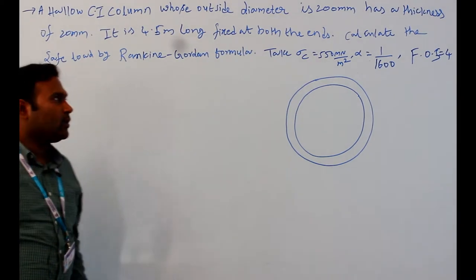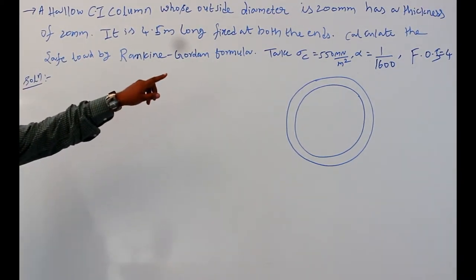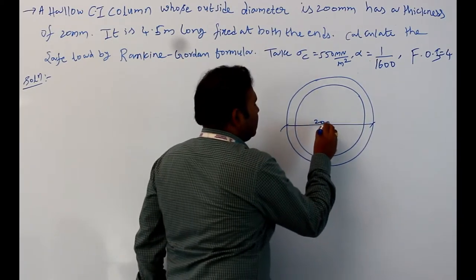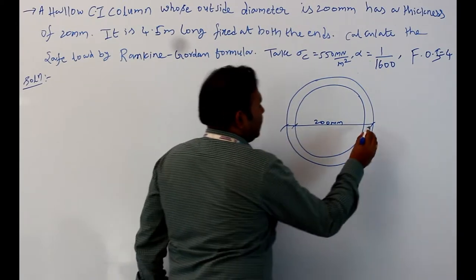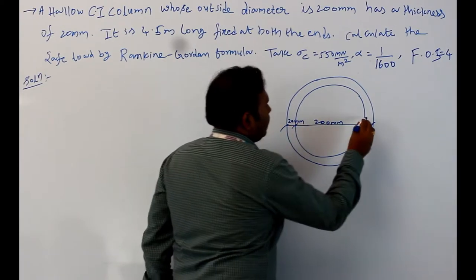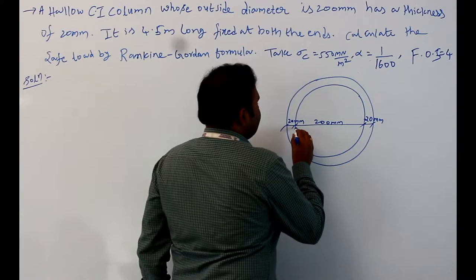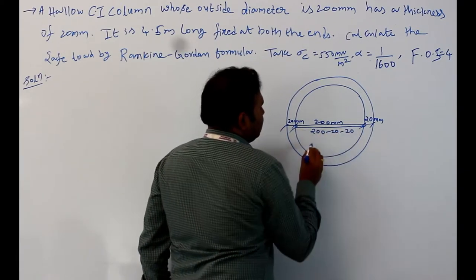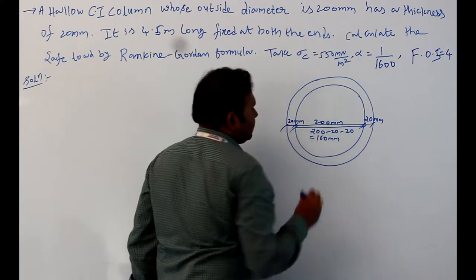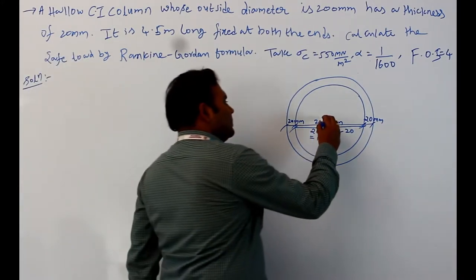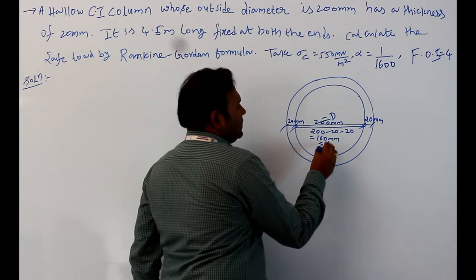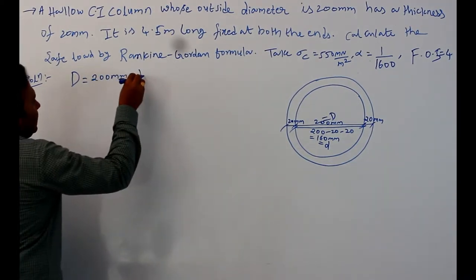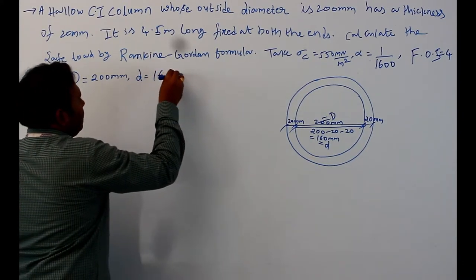We are discussing a hollow cast iron column. The outside diameter is given as 200 mm and the thickness is given as 20 mm. Since both sides have 20 mm thickness, the internal diameter is 200 minus 20 minus 20, which equals 160 mm. So capital D equals 200 mm and small d equals 160 mm.